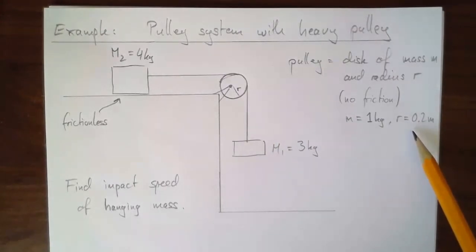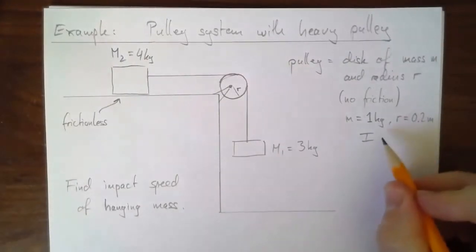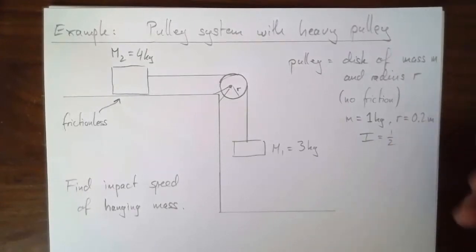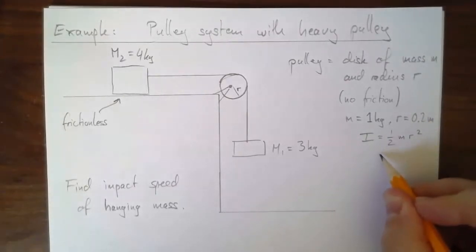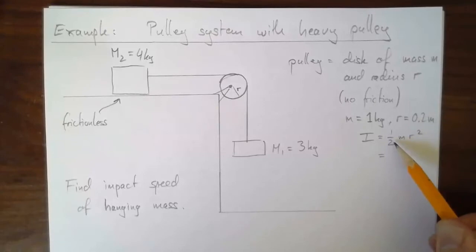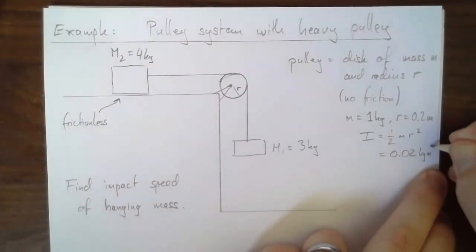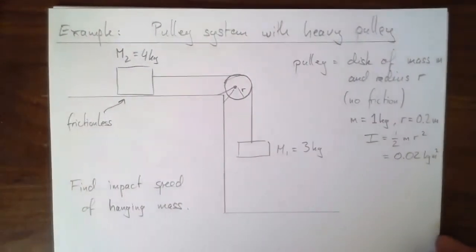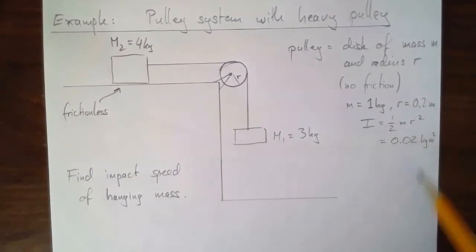We can write down the moment of inertia of the pulley right away. It's a disk, so I_p = ½mR². With our values, R² = 0.04, so I_p = ½ × 1 kg × 0.04 = 0.02 kg·m². Not a big number, but it might be big relative to everything else in the system — it's certainly going to be relevant.